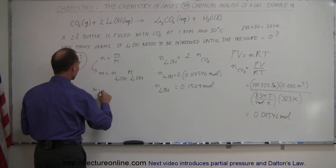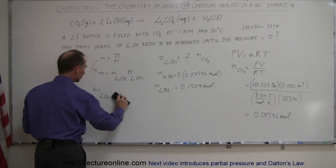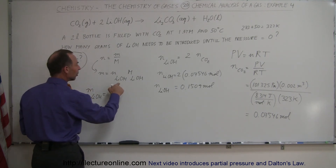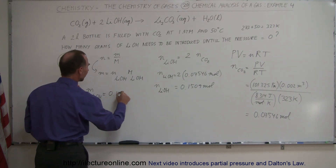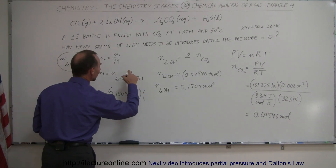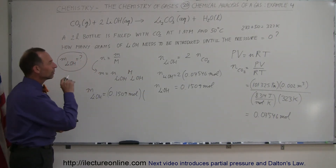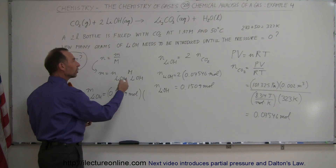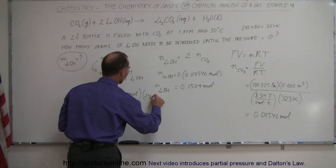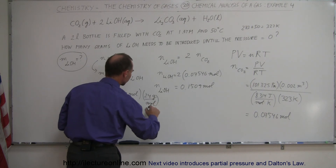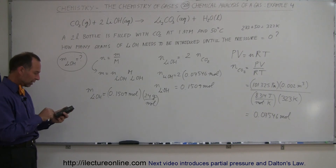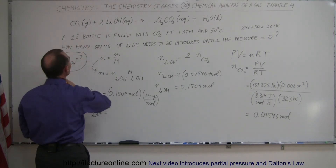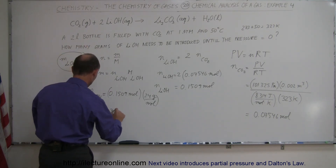Now we take that and plug it into the mass equation. The mass of lithium hydroxide equals the number of moles of lithium hydroxide, which is 0.1509 moles, times the molar mass of lithium hydroxide. The molar mass of lithium is about 7, oxygen is 16, hydrogen is 1 — so 7 + 1 + 16 is approximately 24 grams per mole. Multiplying 0.1509 by 24, the mass of lithium hydroxide required to consume all 2 liters of carbon dioxide is 3.62 grams.